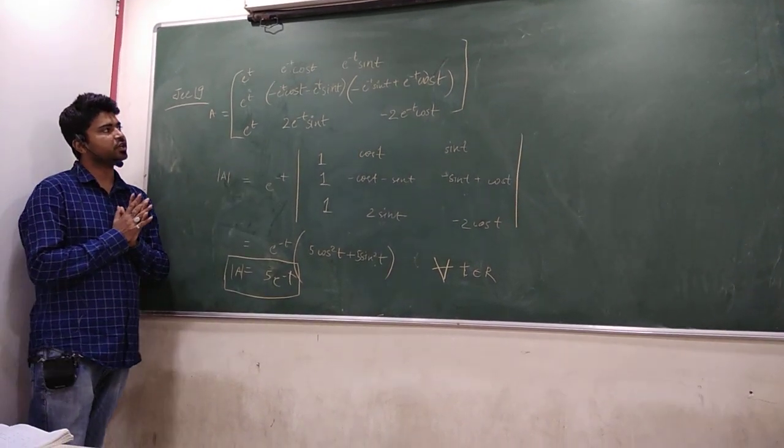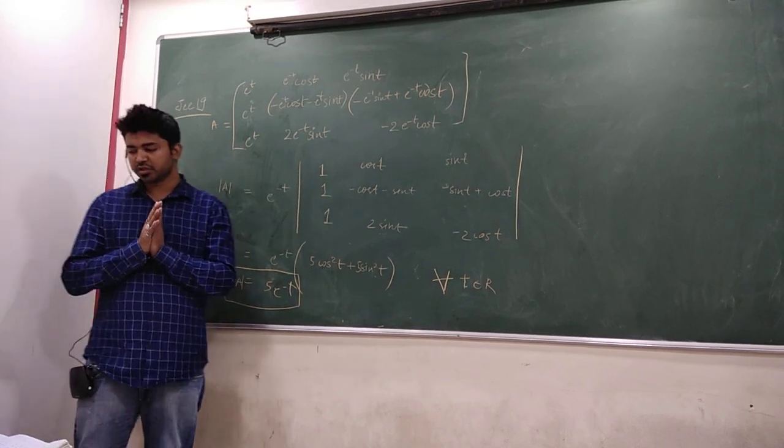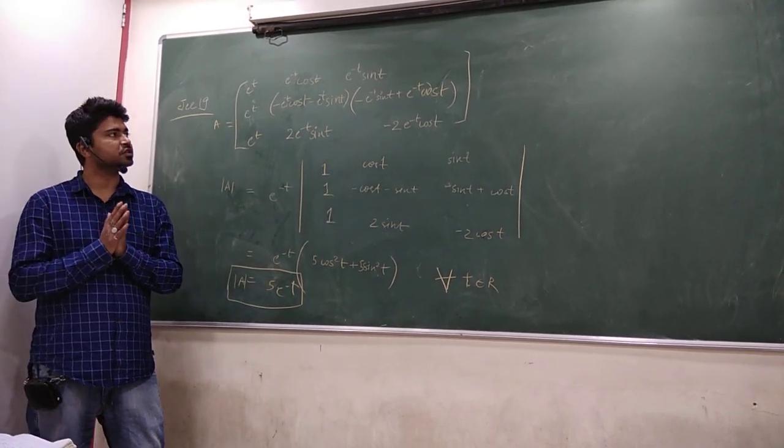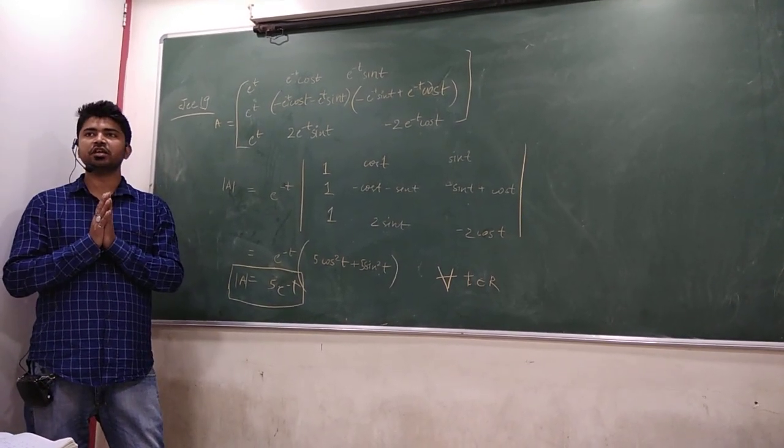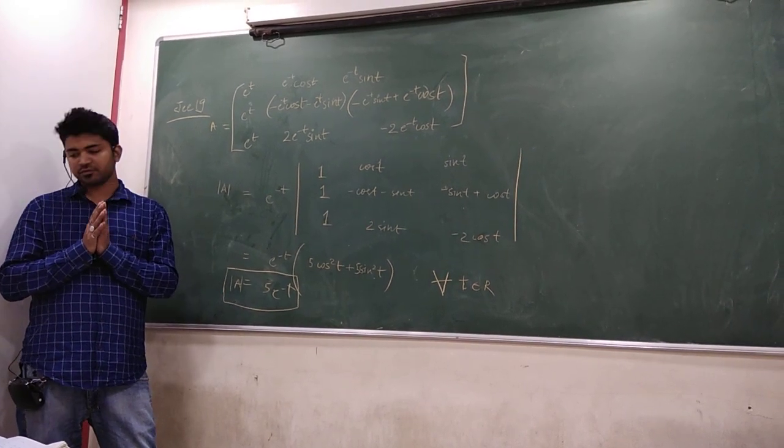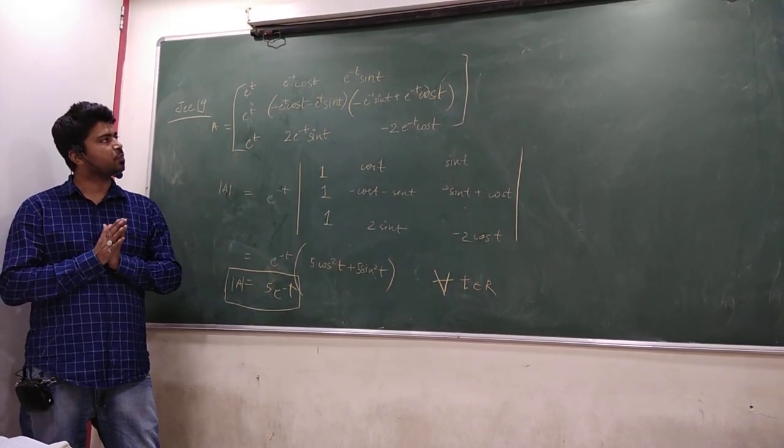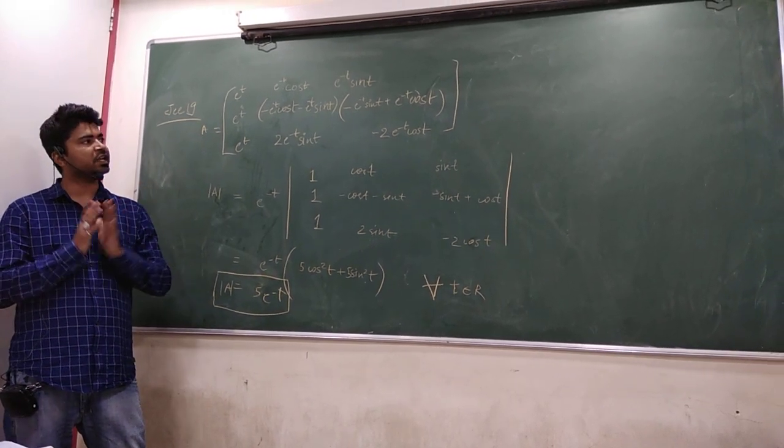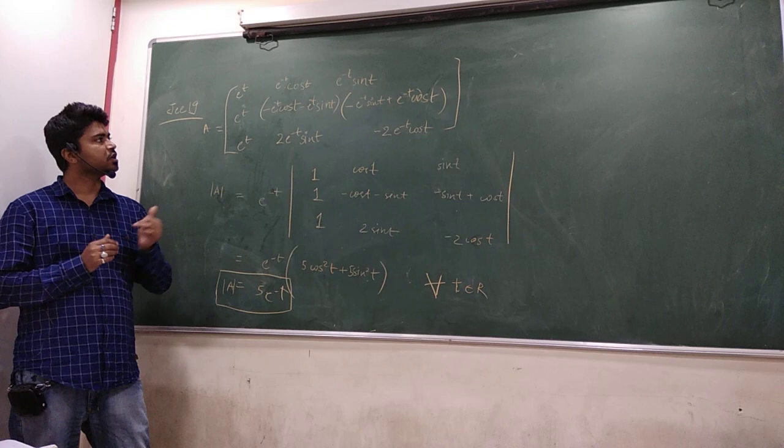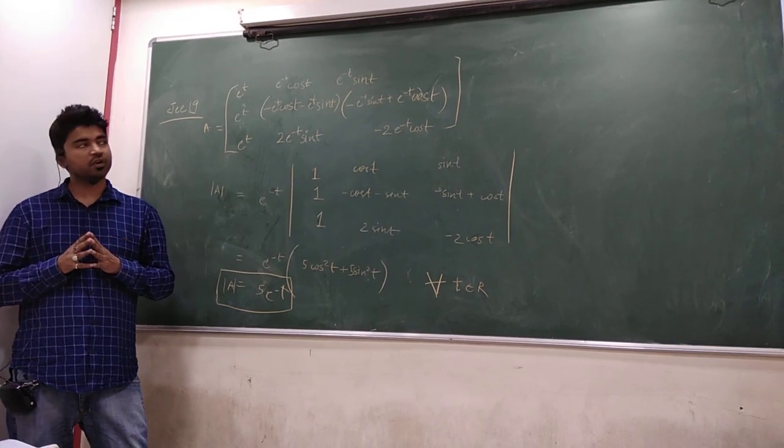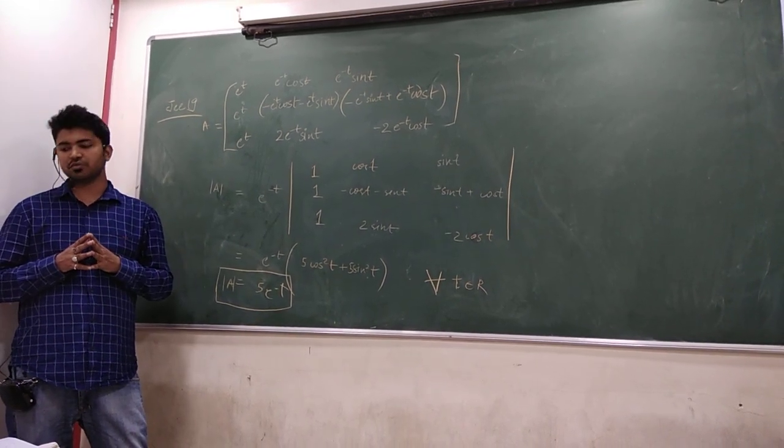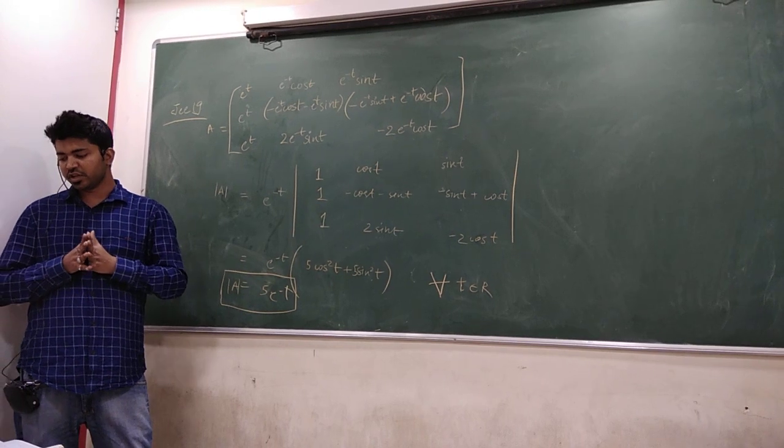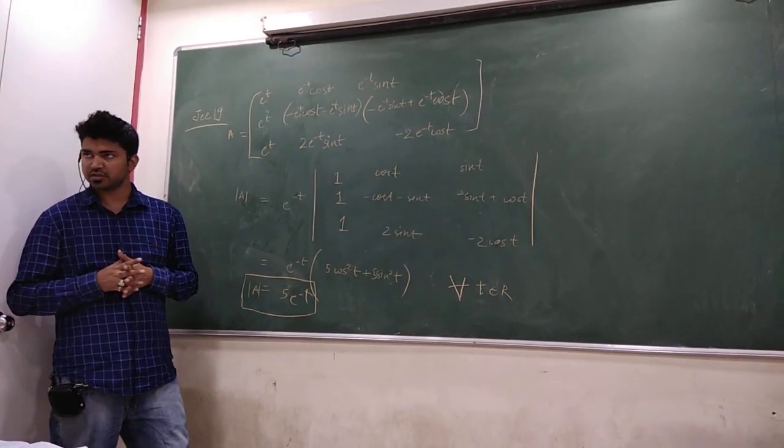So, in the question, it was said that you find out the four options which was the very first option A that is invertible only if t is equals to pi by 2. B option, not invertible for any t belongs to R. C option, invertible for all t belongs to R. And D option, invertible only if t is equals to pi.